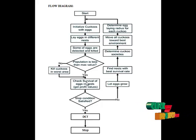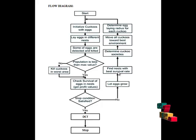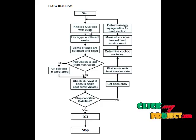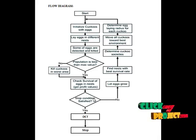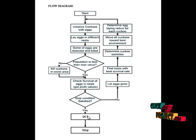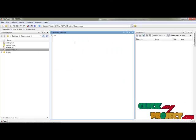Then we check whether the stop condition is satisfied. If not, we let the eggs grow and find the nest with a better survival rate, detect the cuckoo societies, move all cuckoos to the best environment, and finally determine the egg-laying radius for each cuckoo. These cuckoos further lay eggs in different nests based on the egg-laying radius, and this iteration runs until the stop condition is satisfied. If the stop condition is satisfied, we form clusters for the input image. These clustered images are given to the DCT algorithm to encode the cluster formation. Finally, we compress the given image, forming the image compression technique using the combination of DCT with the cuckoo optimization algorithm.